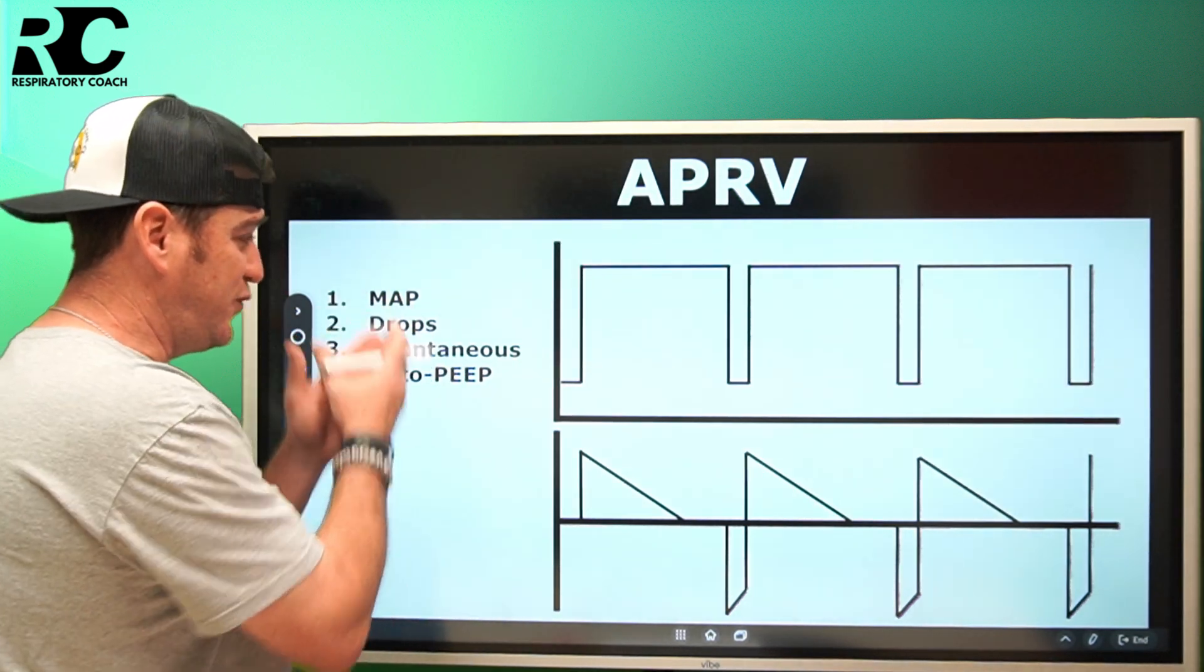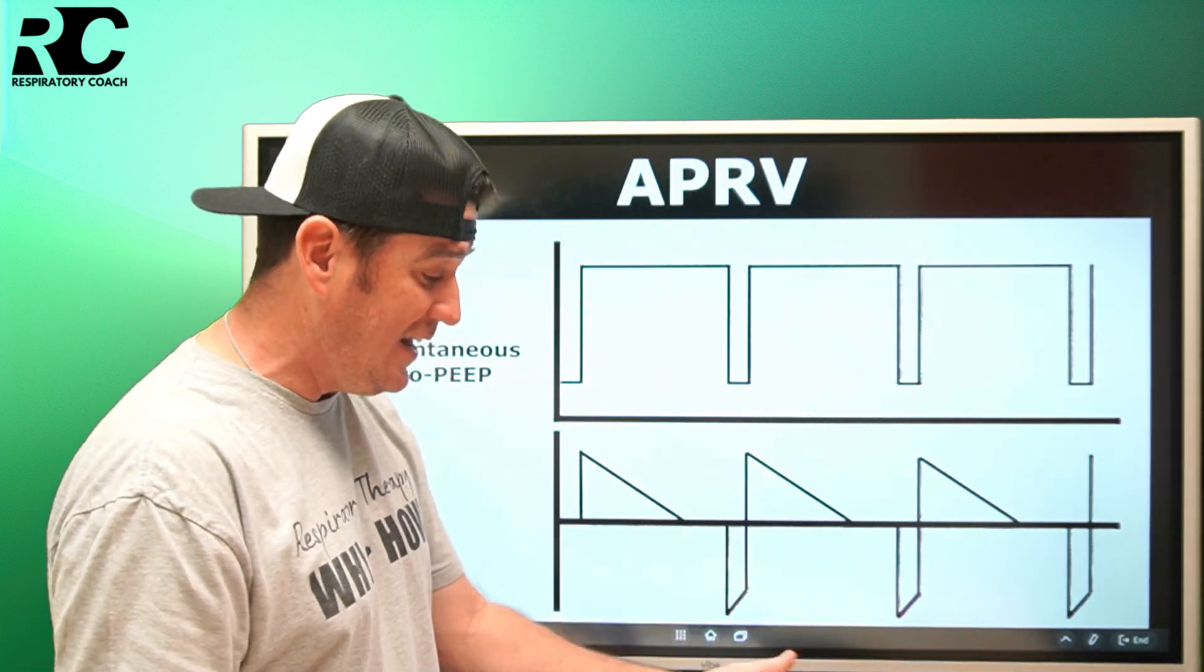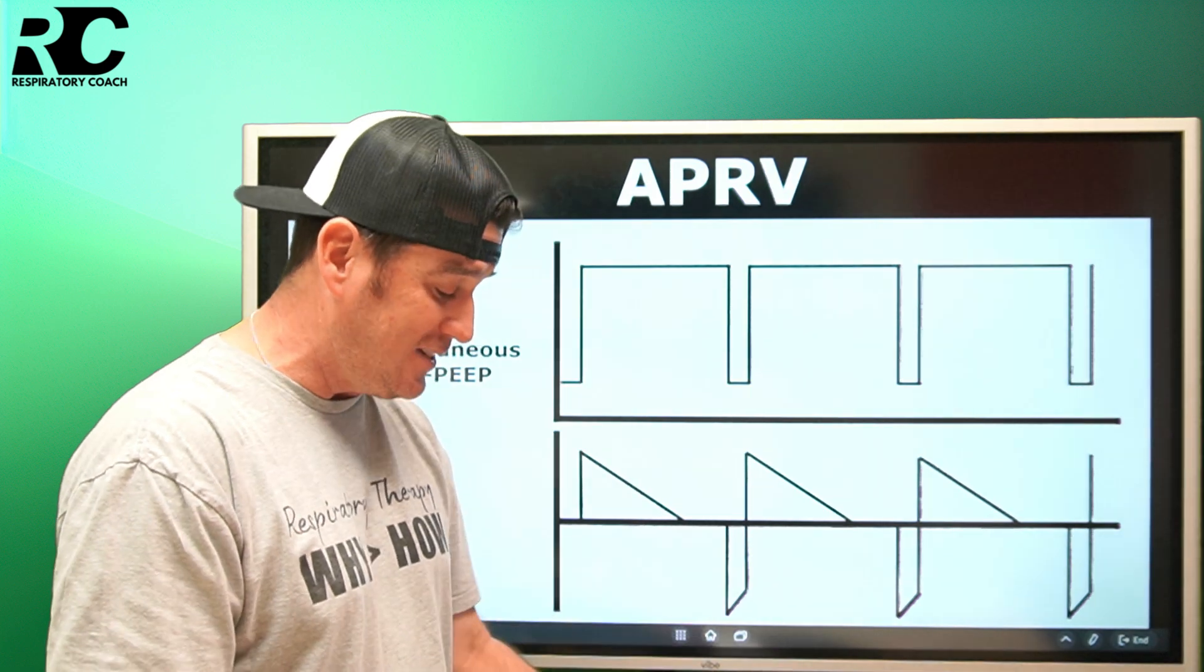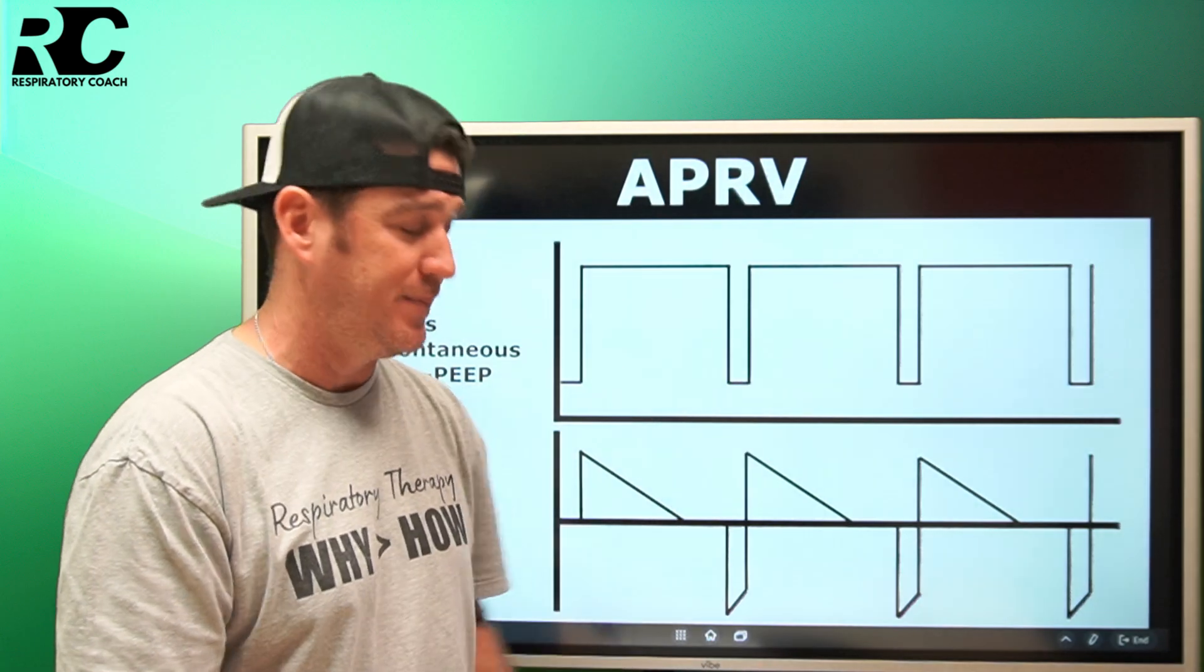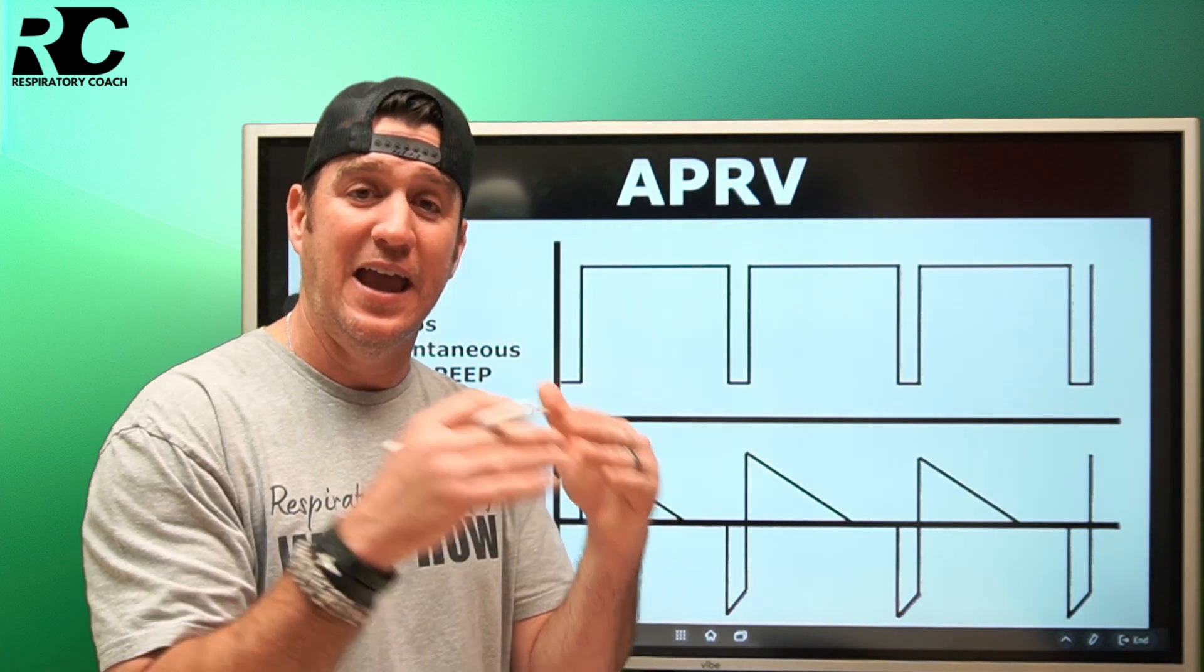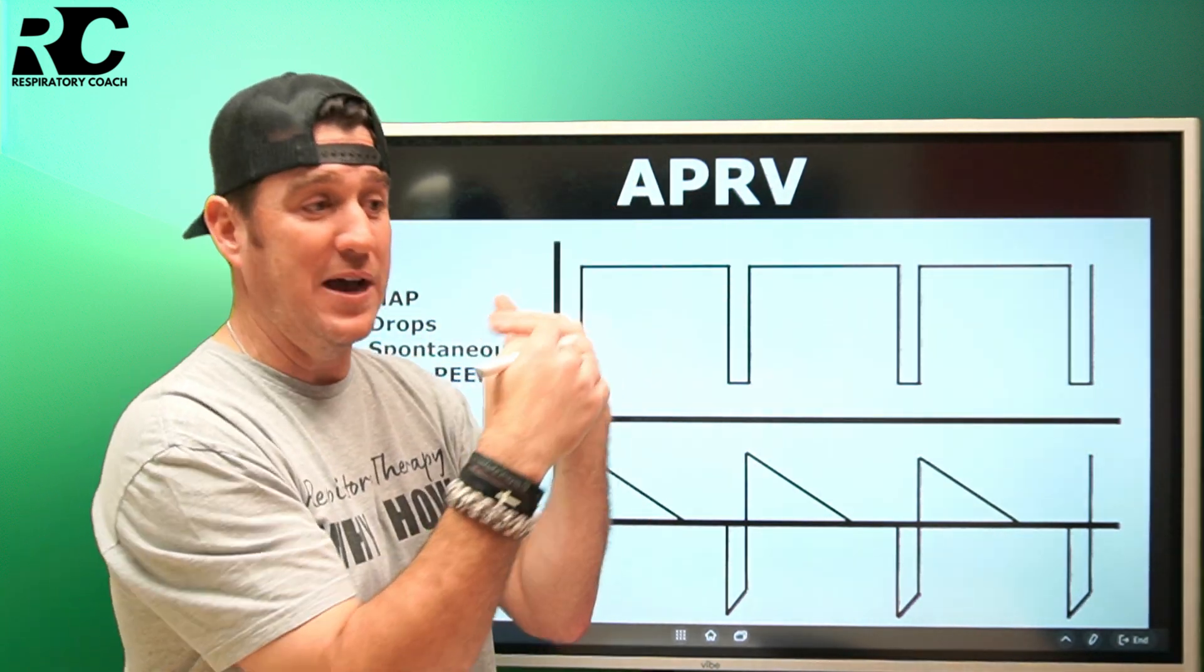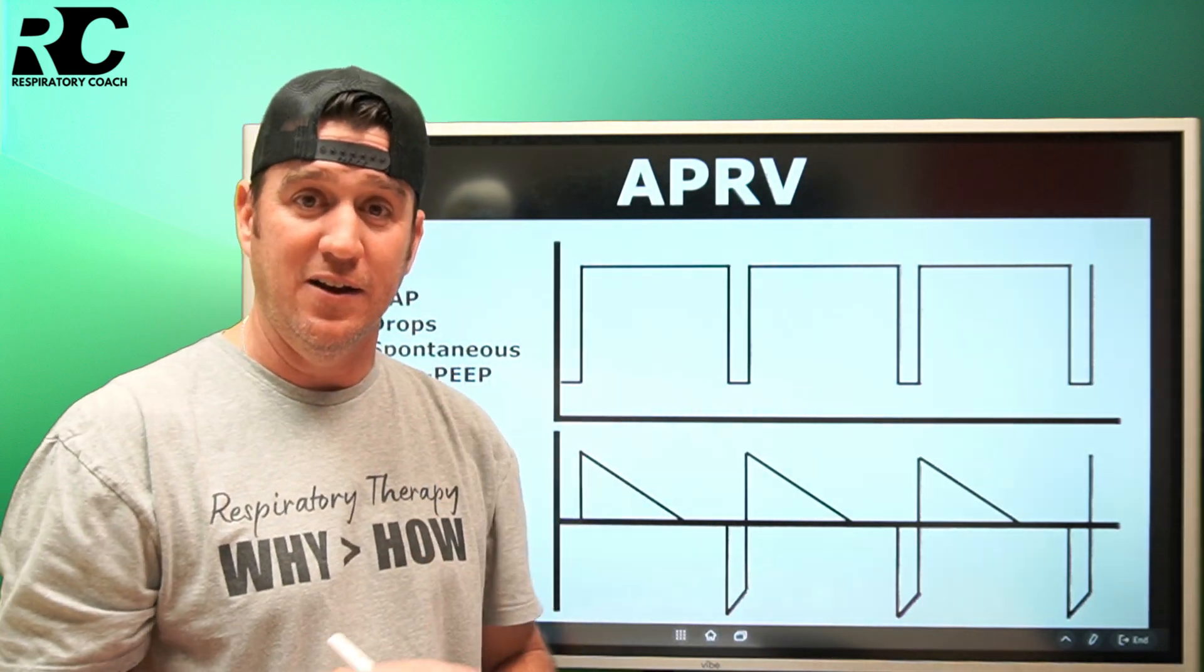Before we talk about these four key components, I want to talk to you about the settings. You can find all this information in Egan's, chapter 49, page 1078 of the 13th edition. It highlights the four settings here: you have a high PEEP, some refer to it as a high CPAP; you have a low PEEP or a low CPAP; and then you have a time high and a time low. Those are your four settings. Think about it: you have a high pressure with a time high, and then you have a low pressure with a time low. Those four settings give you everything you need to set up and manipulate APRV.